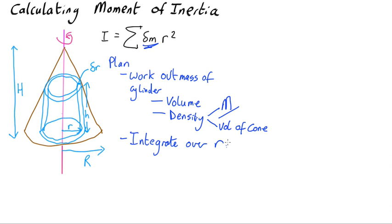Okay. So let's start off with the volume of the cylinder. So this will get you to work out H. What is H? We've got a triangle. That's big R. That's big H.